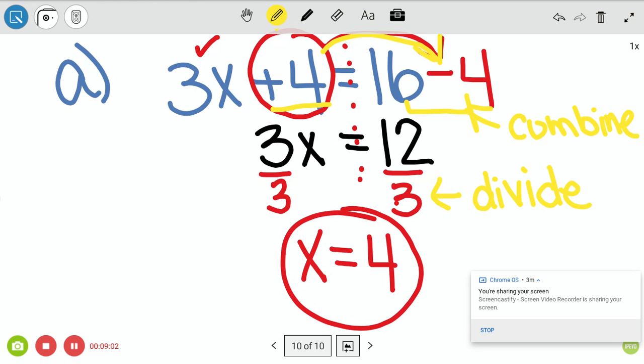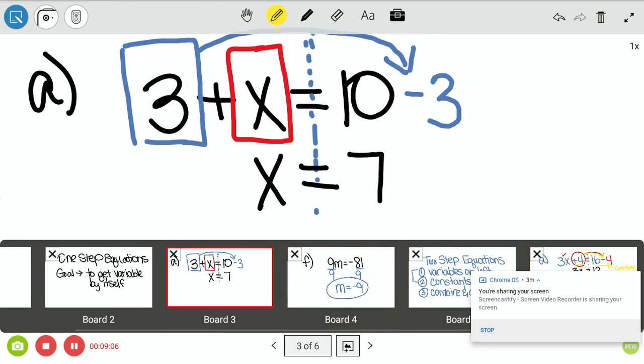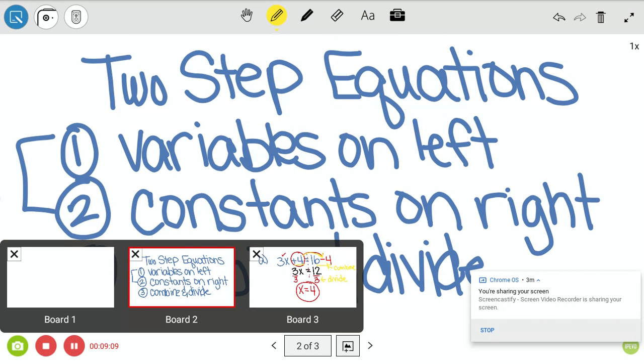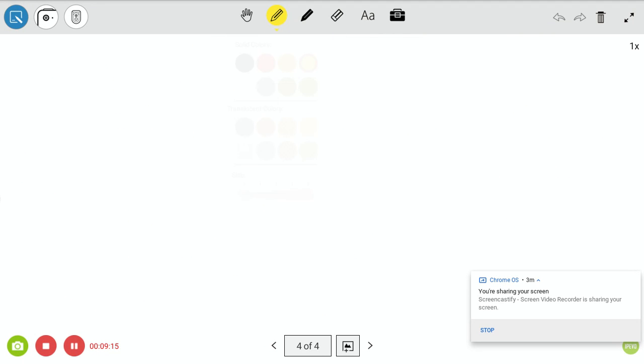Number of boards. Alright, so let's see. Apparently, I can only have 10 boards. So guess what I'm going to do? I'm going to delete some boards. Sorry about that. This is a new, this is new for me. Okay, so let's try another one. Alright, so we've done that. Alright, here we go. Example B.